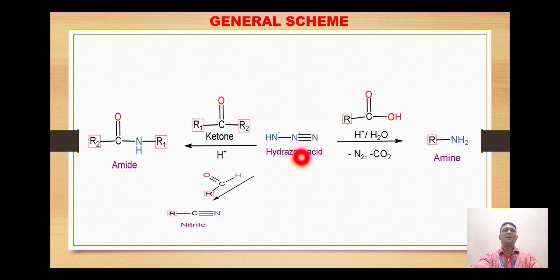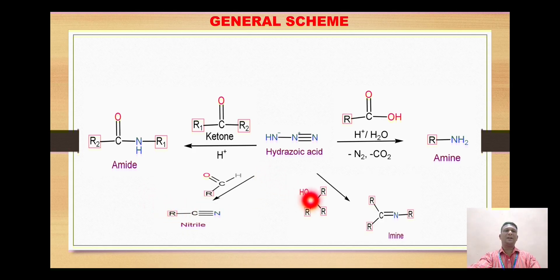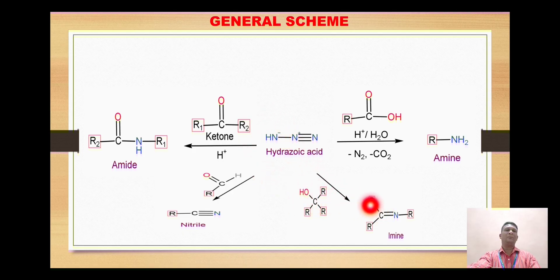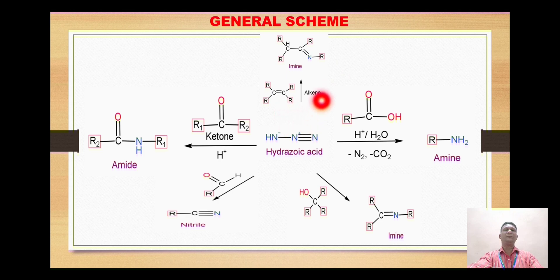When hydrazoic acid is treated with aldehyde RCHO, there is formation of RCNN, which we commonly call cyanides and more accurately call nitriles. When hydrazoic acid is treated with tertiary alcohol, there is formation of an amine with insertion of the NH group between the carbon and one of the alkyl groups, and removal of the hydroxy group. When hydrazoic acid is treated with an alkene, there is formation of imines containing a double bond between carbon and nitrogen.